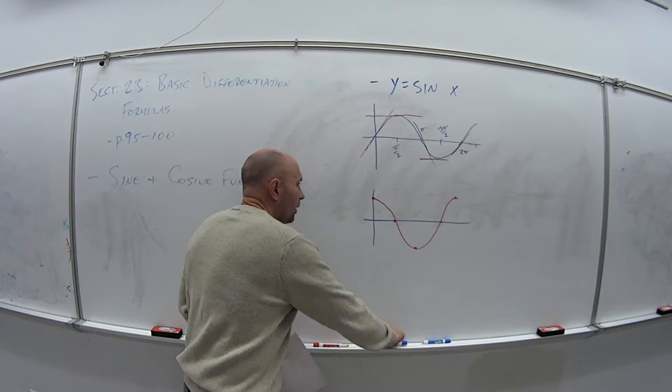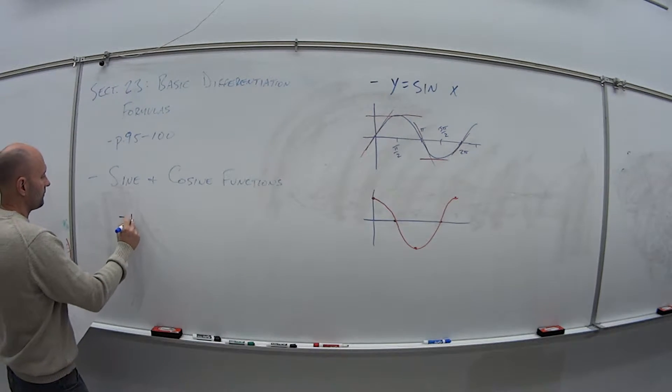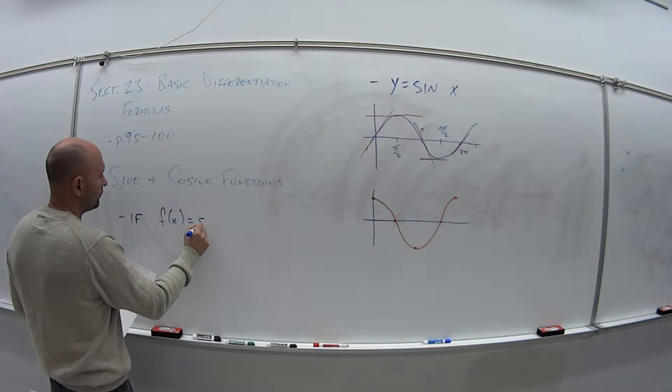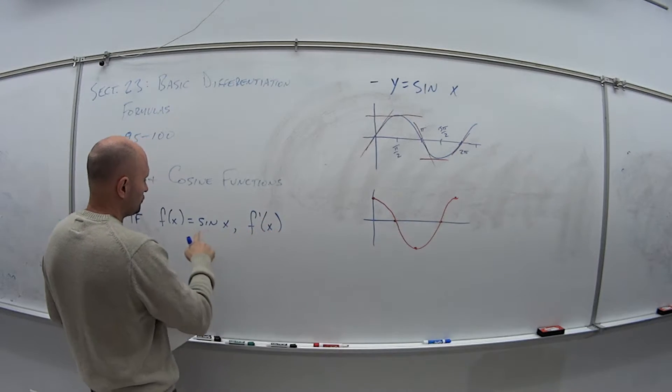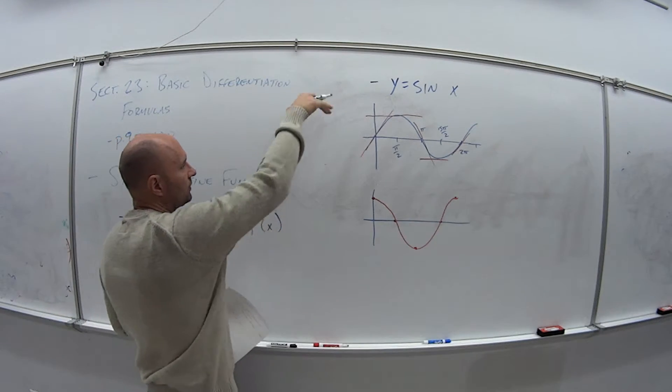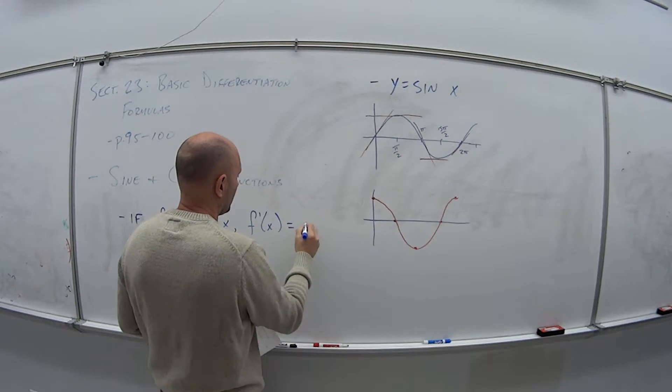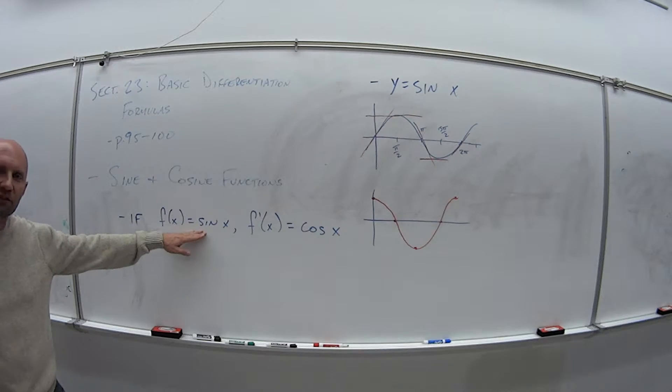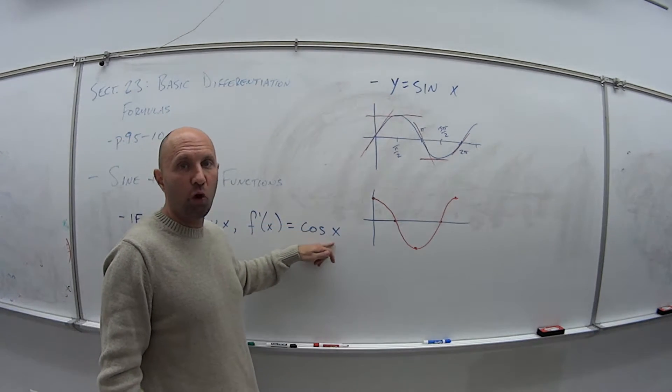So what that means then is if our function f of x is equal to sine of x, then the derivative of that function, the derivative of sine x, the slope of these tangent lines creates the cosine curve. So therefore, if f of x is sine of x, the derivative of sine of x is just cosine of x.